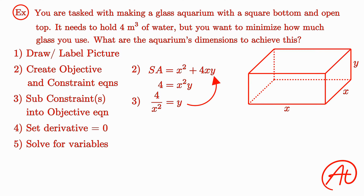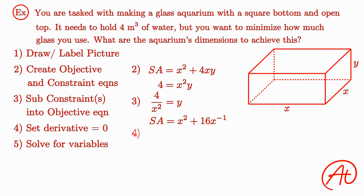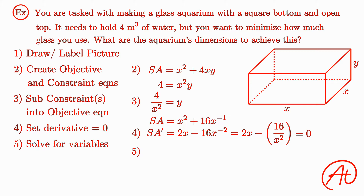Next, we'll plug that into our objective equation to get that the surface area is x squared plus 4x times (4 over x squared). Multiplying in the 4x, we can reduce this to x squared plus 16 over x. To make the derivative a little easier, let's bring the x to the top, making it x squared plus 16 times x to the negative first. Using the power rule, we find that the derivative is 2x minus 16 times x to the negative second, or 2x minus 16 divided by x squared. Now we set this equal to zero because all minimums have a derivative of zero, and then we solve. Adding 16 over x squared to both sides and multiplying by x squared, we get 2x cubed equals 16. Then, dividing by 2 and taking the cube root of both sides, we get x equals 2.